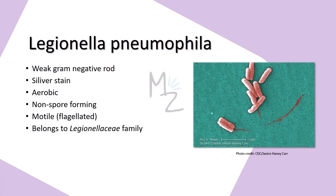Legionella pneumophila is a weak gram-negative rod. Why weak? Because it stains faintly with the traditional gram staining. So we go for another stain — silver stain — to visualize Legionella, as it stains poorly with gram staining. It's an aerobic bacterium, it does not form spores, and it is motile because it has a flagella at one end. It's a flagellated bacterium and belongs to the Legionellaceae family.